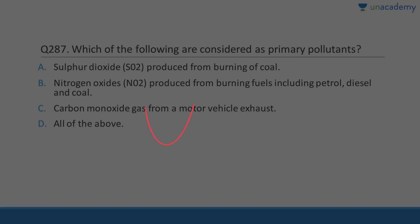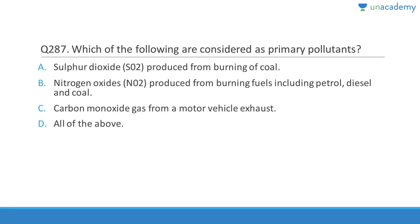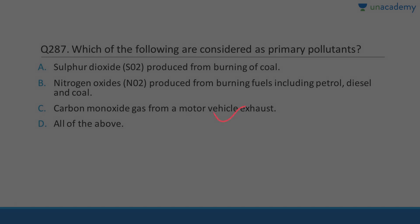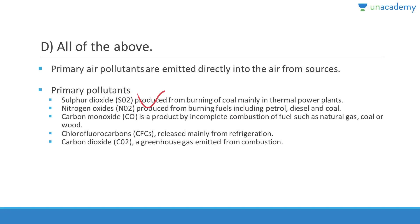Question 287: Primary pollutants include sulfur dioxide from burning coal, nitrogen oxides from burning fuels such as petrol, diesel, and coal, and carbon monoxide from motor vehicle exhaust. Answer is D (all of the above). SO2, NO2, carbon monoxide, CFCs, CO2 — all of these are primary pollutants.